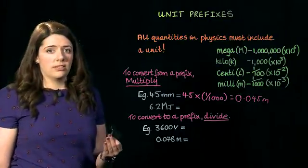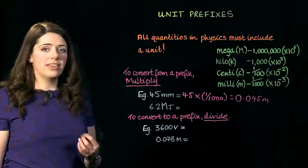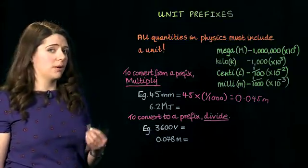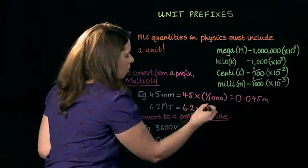It works the same for the large prefixes too. Here we've got 6.2 megajoules. To convert that into joules, I multiply by the value of mega. So 6.2 times the value of mega, which is one million.